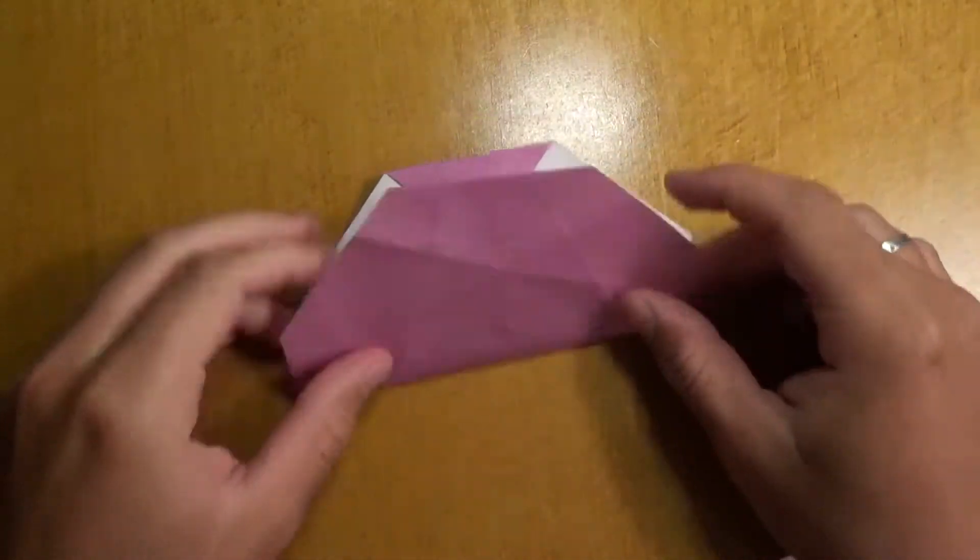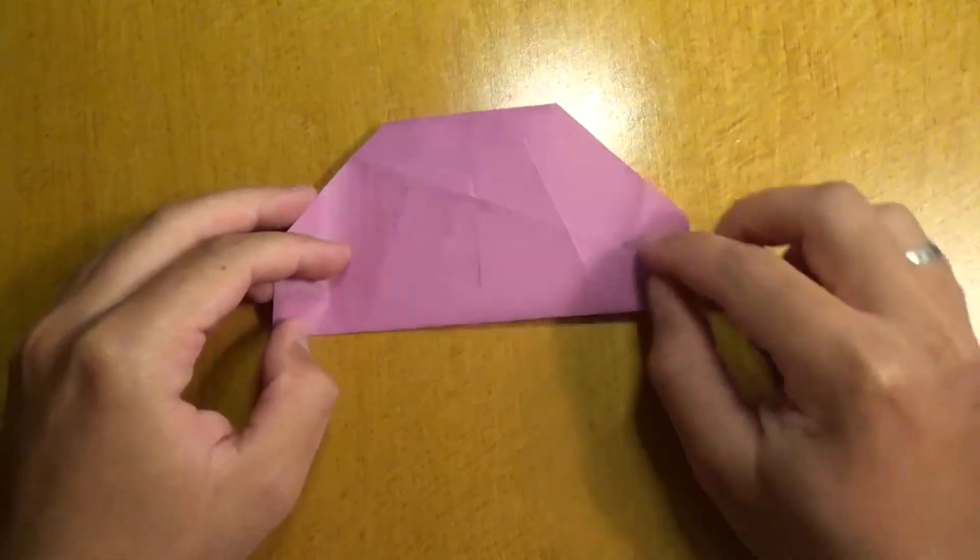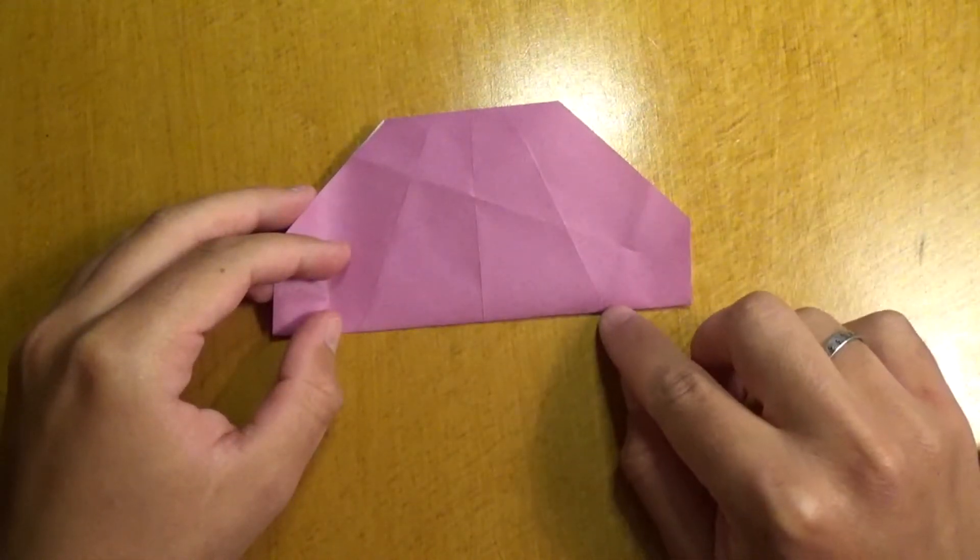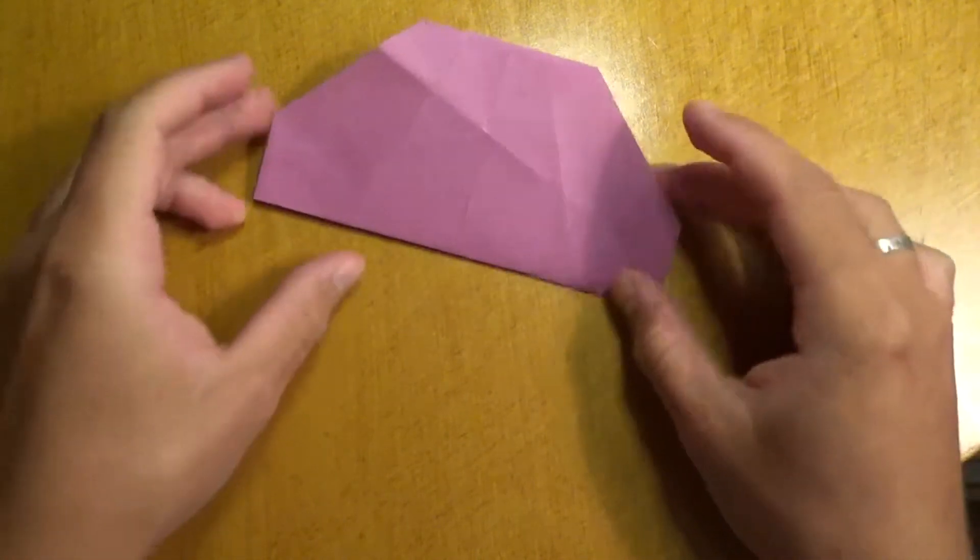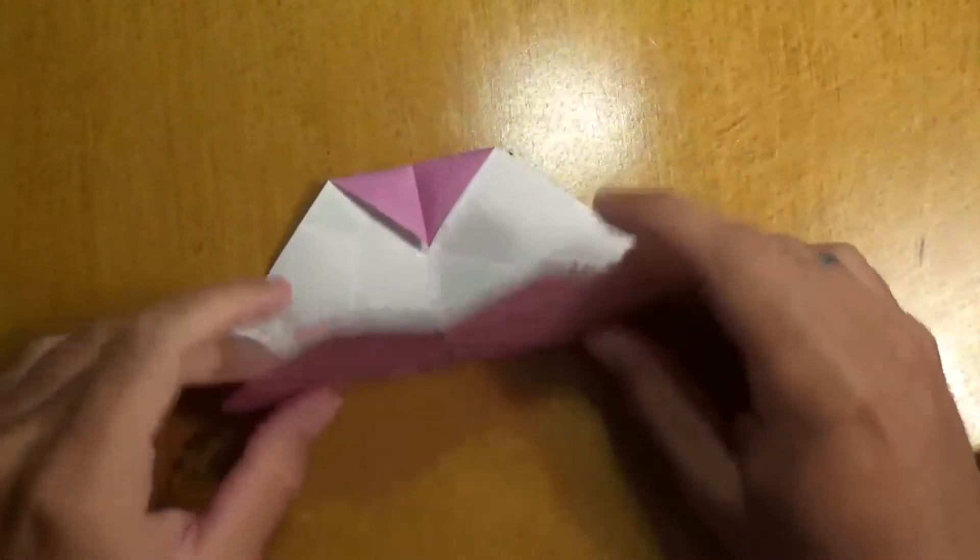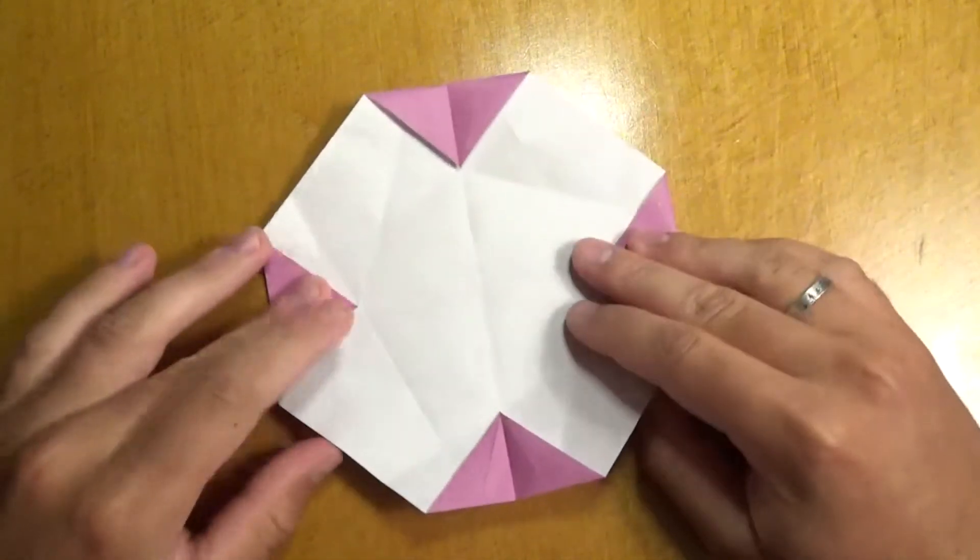So now, what we're going to do is we're going to fold this diagonally in half, and don't fold the whole thing. We're just going to reinforce these two sides. So just from here to that crease right there, and from here to there, like that. And repeat on this side. And the other direction.